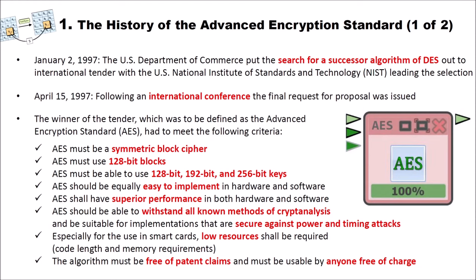The history of the advanced encryption standard. In January 2, 1997, the US Department of Commerce put the search for a successor algorithm of DES, our data encryption standard, out to international tender with the US National Institute of Standards and Technology NIST leading the selection. At that time people knew that DES was not secure enough anymore, so the need for a new encryption standard was there. DES was more or less constructed in secret.